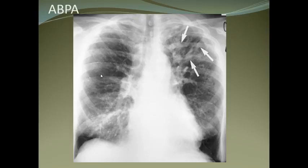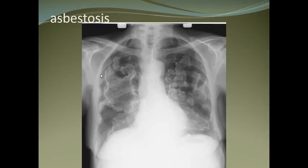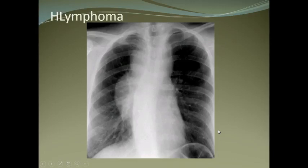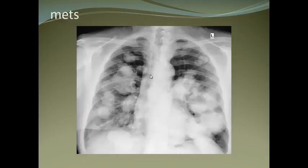Allergic bronchopulmonary aspergillosis shows a finger-in-glove appearance with multiple bronchoceles. Lung abscess shows an air-fluid level. Asbestosis is another finding. Lymphoma usually presents with enlarged hilar nodes.